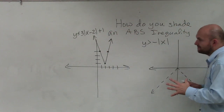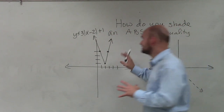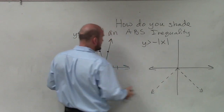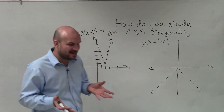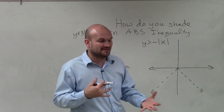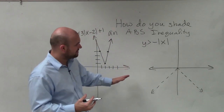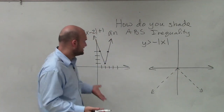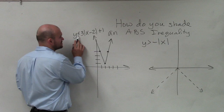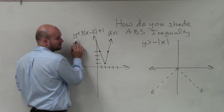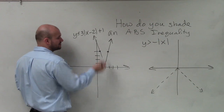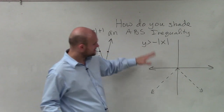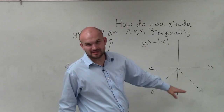However, once we get the graph, there could be a difference if it's solid or dashed. We can use test points, but I think the easiest way to determine if it's solid is just look at the inequality symbol. If it's less than or equal to, or greater than or equal to, then it's solid. If it's greater than or less than, then it's going to be dashed.